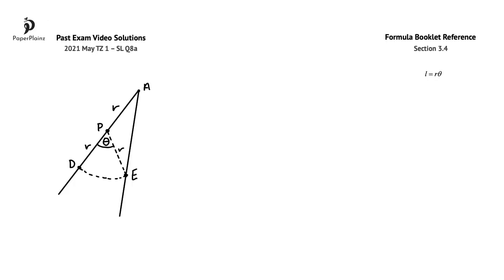In this question we have a diagram that shows two straight fences. A horse is tied to a post at P with a rope that has a length of r meters. On the diagram, PD is equal to PE is equal to PA is equal to R. Angle DPE is theta radians. The length of arc DE is 28 meters.